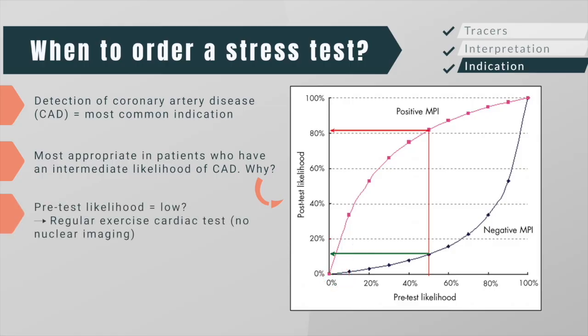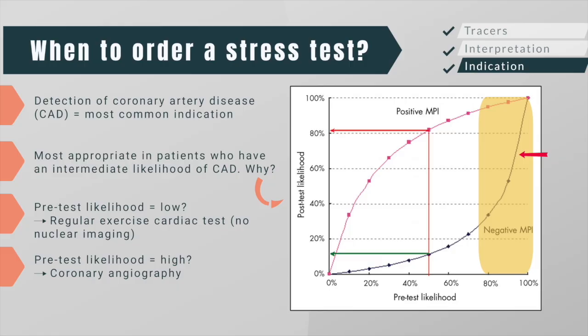Therefore, experts recommend using the regular exercise stress test in patients with a low pre-test probability, and coronary angiography in patients with a high pre-test probability, because a negative nuclear stress test would still result in a relatively high coronary artery disease likelihood.